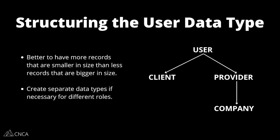Let's look at a quick example of an application where we have service providers doing home repairs for clients. There are two different types of users: the service providers themselves and the clients or customers. They both need to log into the application and the app needs to know different information about them. One approach is to break down all of that information into separate data types, because with Bubble it's actually better to have more records in the database that are smaller in size compared to fewer records that are bigger in size, where everything is combined into one large data type.